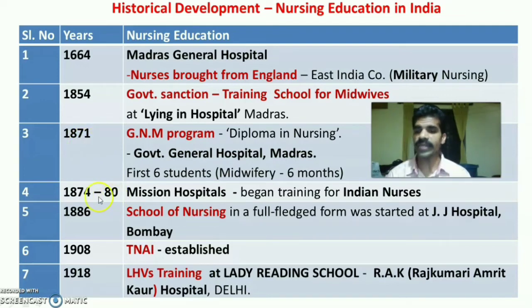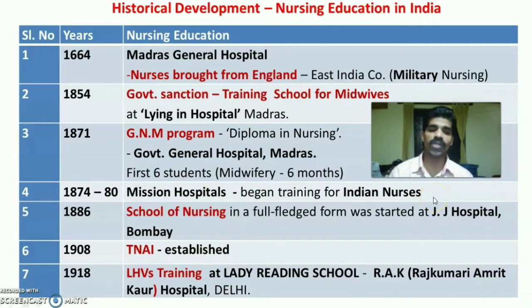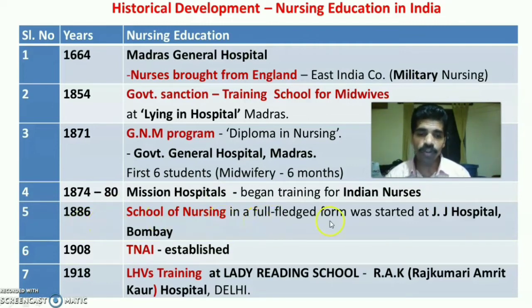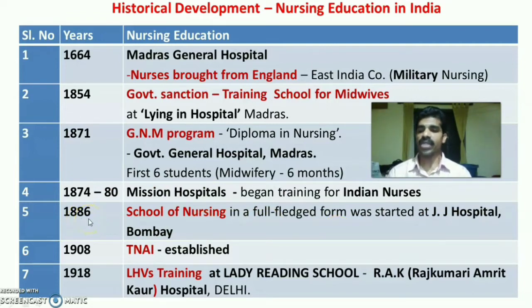From 1874 to 1880, Mission Hospitals in India started training for Indian nurses, preparing them to render services to Indian hospitals. Then in 1886, the first full-fledged School of Nursing started. The complete three-year GNM program — Diploma in Nursing — was started at J.J. Hospital, Bombay, as a full-fledged nursing program.